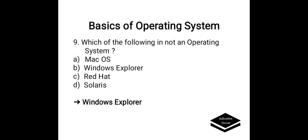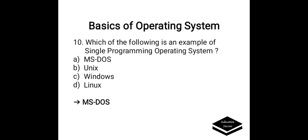Which of the following is not an operating system? Options are A. Mac OS, B. Windows Explorer, C. Red Hat, D. Solaris. Correct answer is B, Windows Explorer. Windows Explorer is not an operating system.